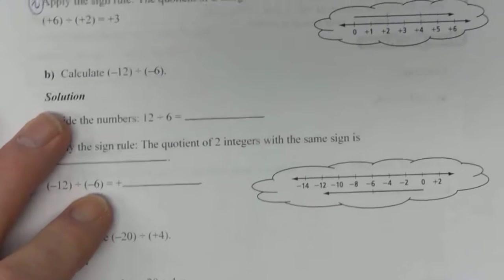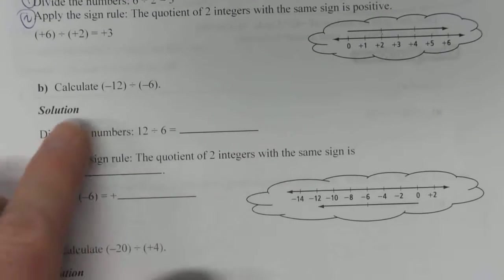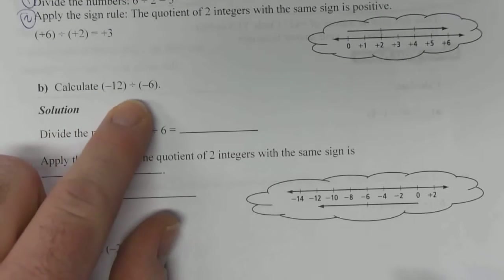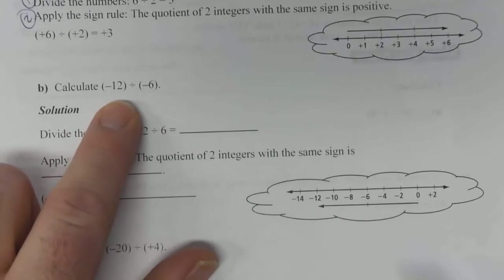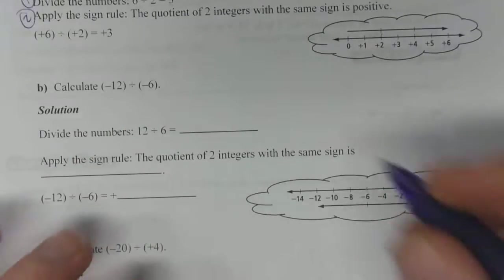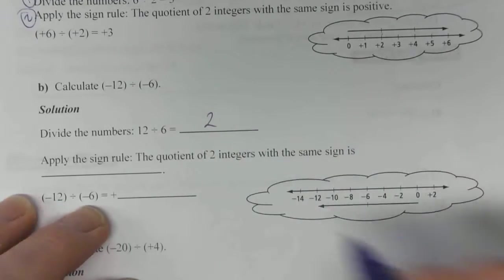Example B. Same sort of situation. We've got negative 12 divided by negative 6. Step 1, divide the numbers. 12 divided by 6 is 2. That's step 1.